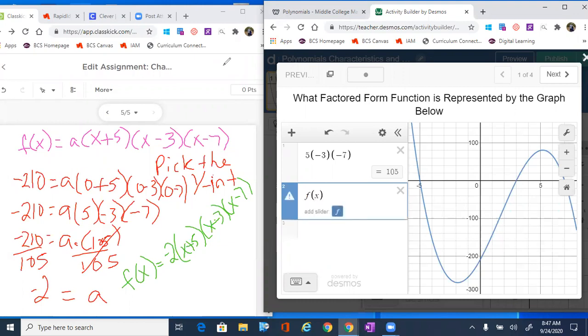And f of x equals to, and let's just plug it in, negative two, x plus five, x minus three, and then x minus seven. And notice what happens.